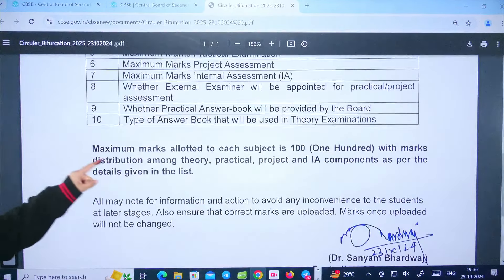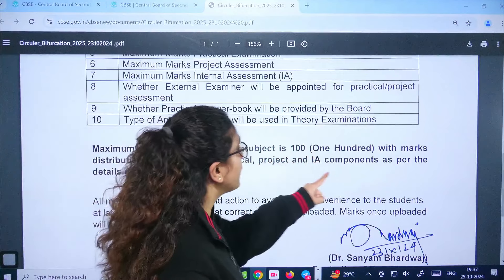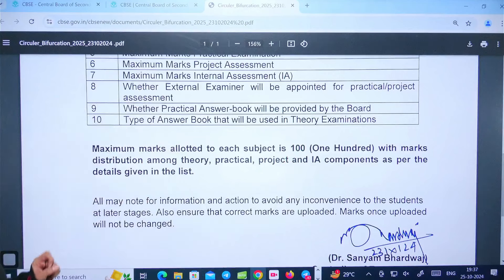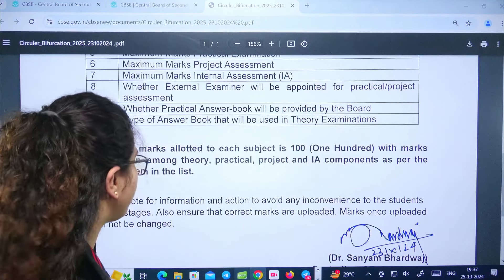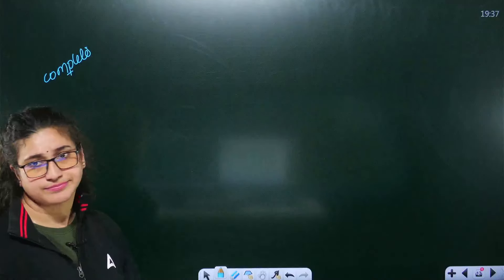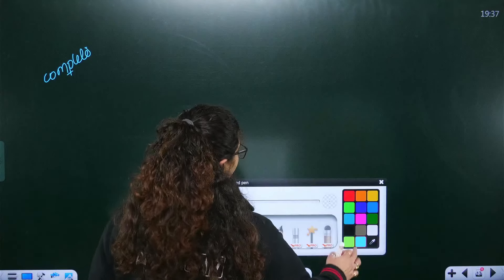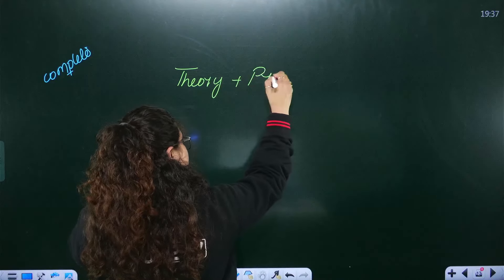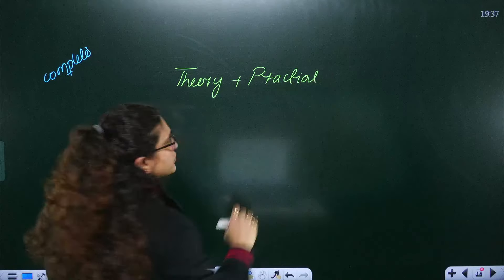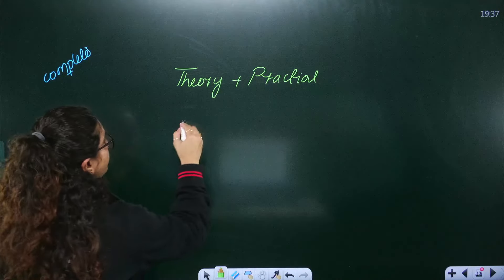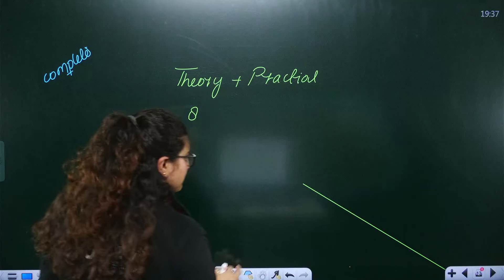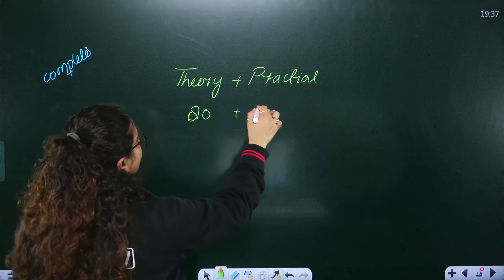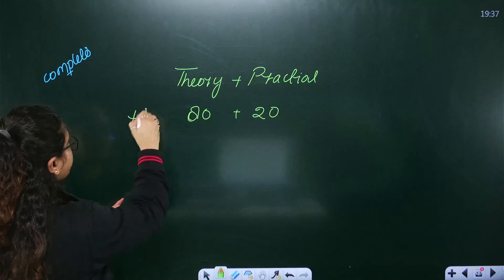It is also mentioned here that the maximum marks allocated to each student is 100, with marks distributed among theory, practical, project, and other components as per the details in the list. For example, in English, History, or Political Science, the theory part carries 80 marks maximum, and 20 marks are for practical.